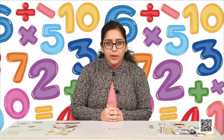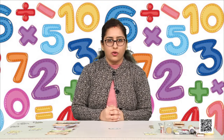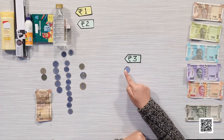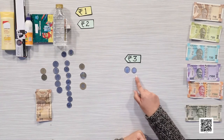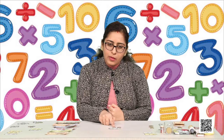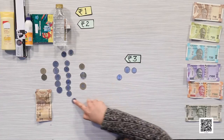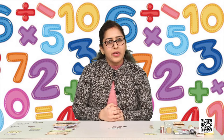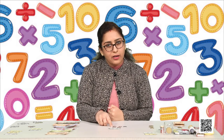Now, if we have to give rupees 3 to somebody, what can we do? Do we have a coin of rupee 3? No, we do not. So we can give a coin of rupee 2 and a coin of rupee 1 - 2 and 1 makes 3. We can also give 3 coins of rupee 1: 1, 2, 3. So if something costs rupees 3, we can give a coin of rupee 2 and a coin of rupee 1, or we can give 3 coins of 1 rupee.